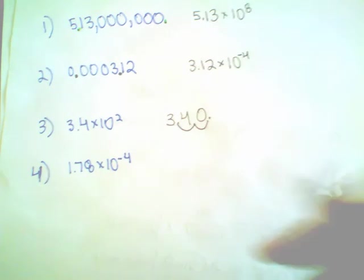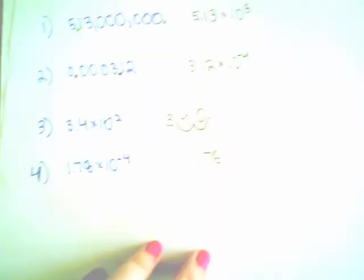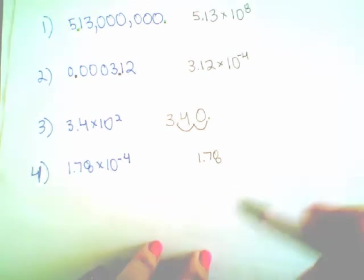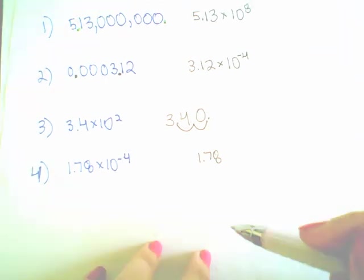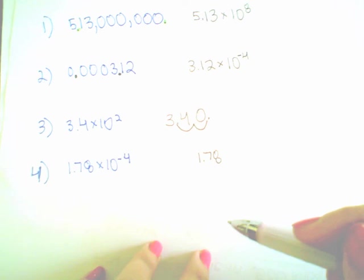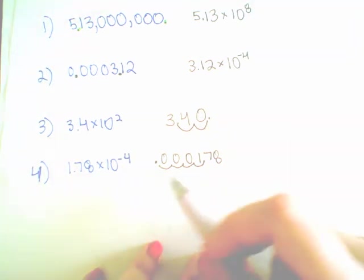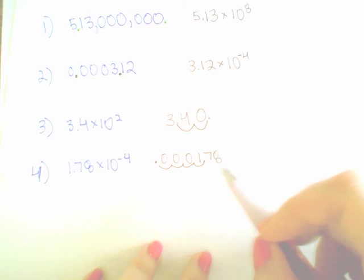In the next example, I have 1.78 times 10 to the negative 4. Negative 4 means I'm going to move the decimal place backwards. It gets smaller. Negative means it gets smaller. Positive means it gets larger. So I move it back 1, 2, 3, 4. And you will get .000178.